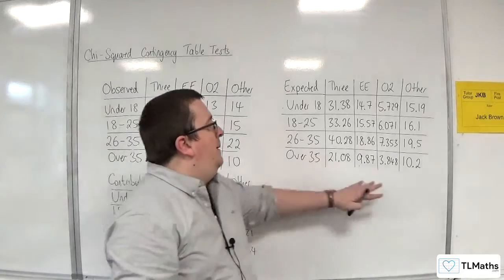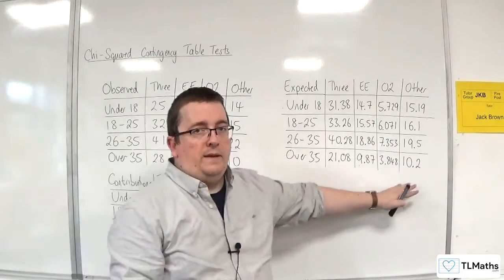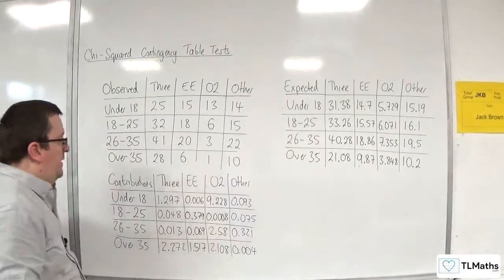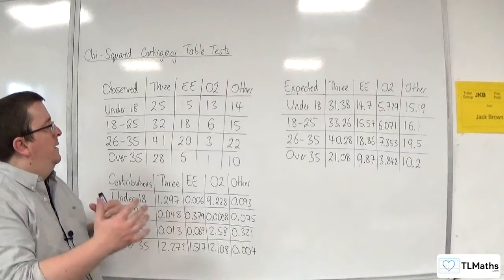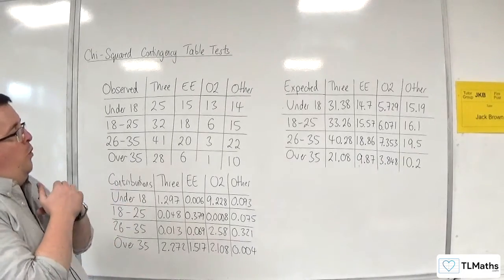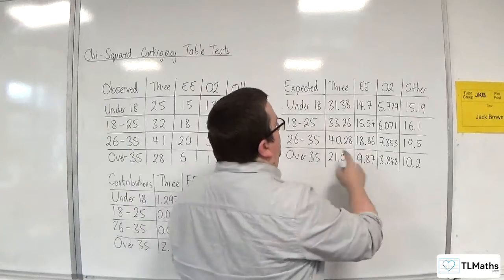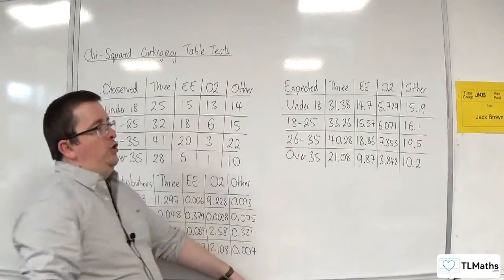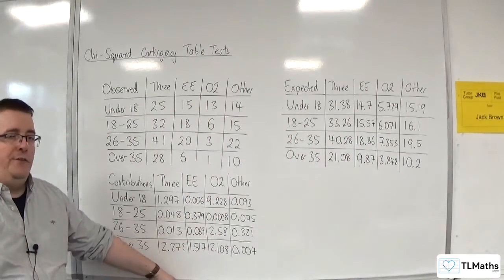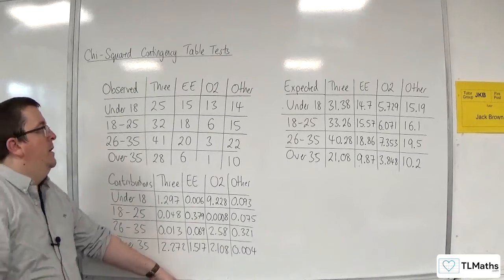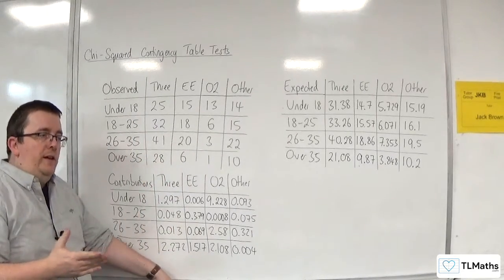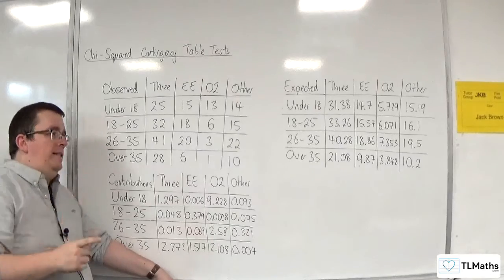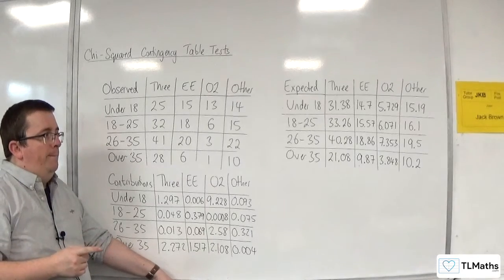I've then calculated the expected frequencies, assuming that they were independent, and then I've calculated the contributions. So what you want to do is focus in on the expected frequencies and question any of these if they are under 5. It doesn't matter if the observed frequencies are under 5. It only matters if the expected frequencies are under 5.